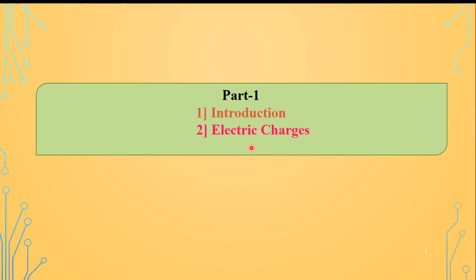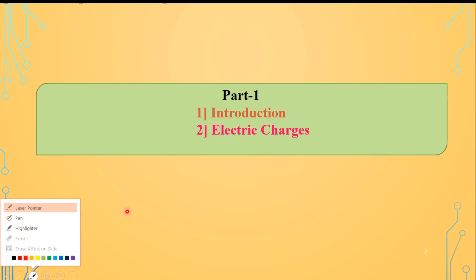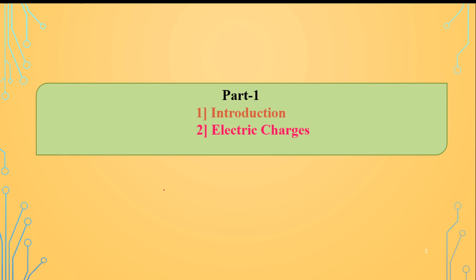In this 1st part we are going to discuss the introduction and electric charges. There are mainly two types of electric charges: one is the positive charge and another is the negative charge. If a body has the same number of positive and negative charges, we can say that body is neutral.